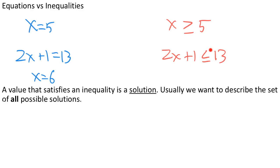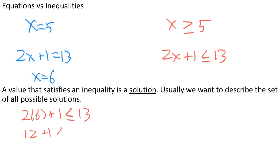Let's test a few values in our inequality to get a handle on what the solutions are. Notice the symbol says less than or equal to, so x equals 6 — the solution to the equation — should also be a solution to the inequality. Let's test it: 2 times 6 plus 1 less than or equal to 13. Well, 2 times 6 is 12; 12 plus 1 less than or equal to 13 gives us 13 less than or equal to 13. That's true, so 6 is a solution to our inequality.